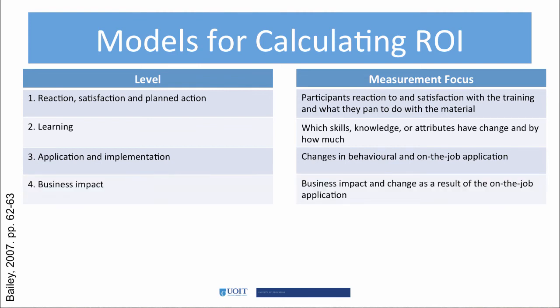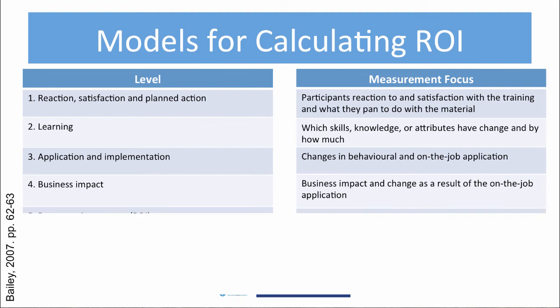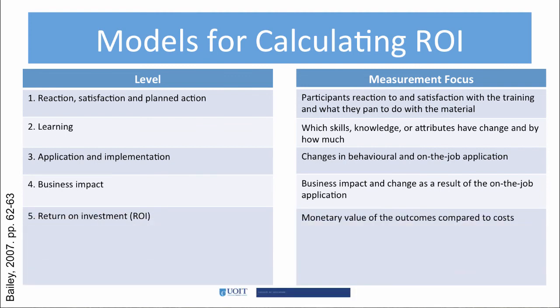Step four addresses this issue with business impact. This focuses on the actual business results achieved by training participants as they apply what they have learned in their workplace — measuring output, quality, cost, and time. The final step is return on investment, the ultimate level of evaluation. It compares the monetary benefits with the program costs. Although ROI can be expressed in several ways, it is usually presented as a percentage or cost-benefit ratio.